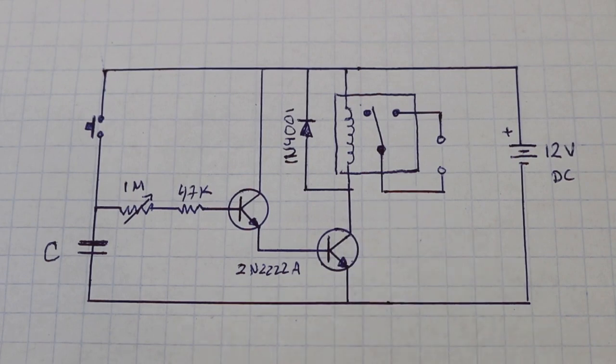Using two transistors, we draw very little current from the capacitor and we can use a smaller capacitor in the circuit.